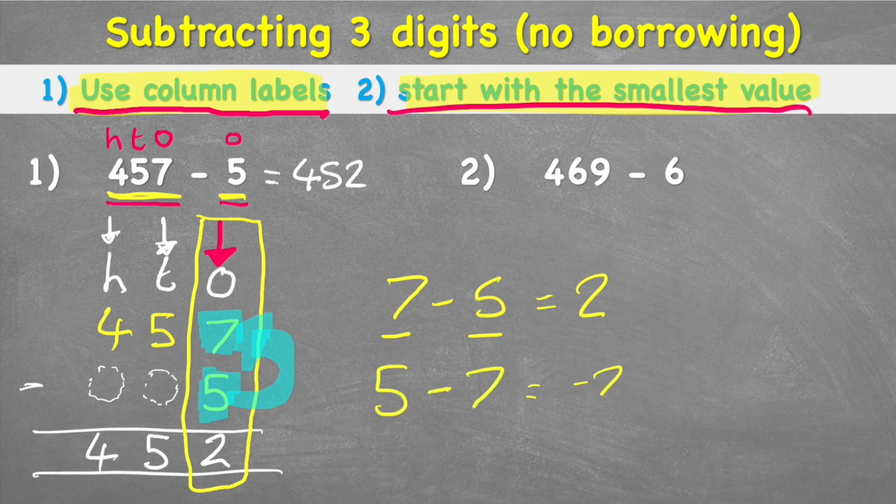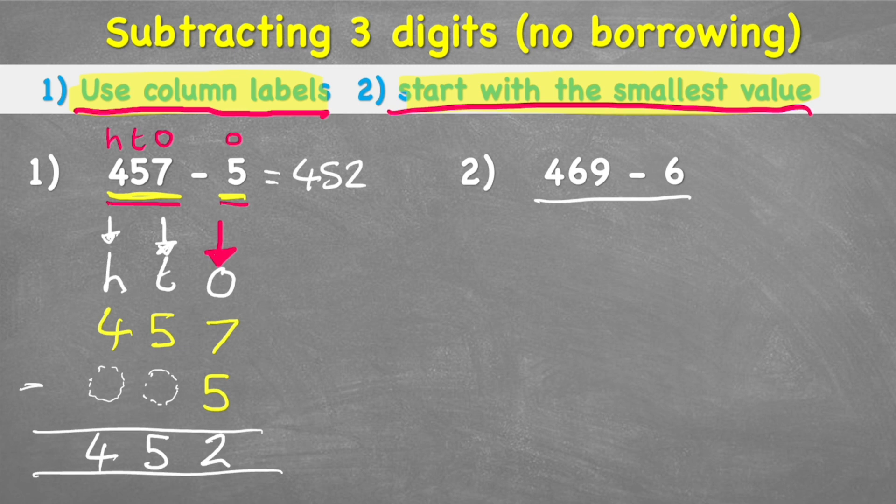It actually gives us negative two. Yuck. So remember, the number on the top of our columns is the number we put first, and the number on the bottom of our columns is the number we're taking away, so we put it second. Okay, question two: 469 subtract six. I'm going to do this a little bit quicker, so I'm going to put my ones, tens and hundreds, put my number in place. I have nine ones, six tens and four hundreds in the first number, and then a six ones in the second number. Put my equals line, my subtraction sign, and I'm ready to begin.